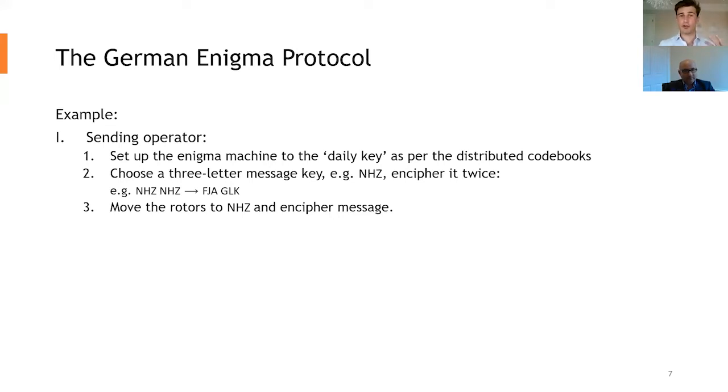The operator would then encipher this twice. So you get the plain text, N, H, Z, N, H, Z, and that would go to an encrypted message, F, J, A, G, L, K.